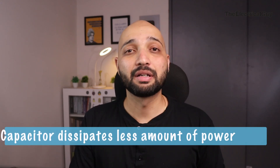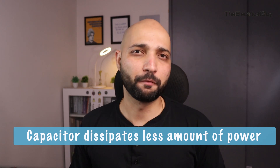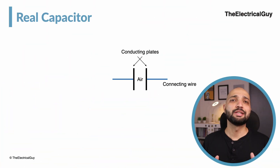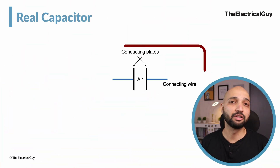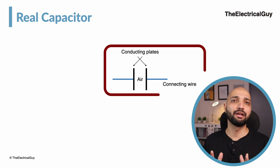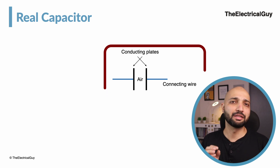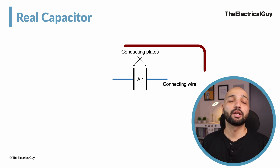Since the internal resistance of a capacitor is very very less compared to an inductor, a capacitor also dissipates less amount of power. If you see the simple construction of a capacitor, it consists of two parallel plates which are separated by some insulating medium, which can also include air.